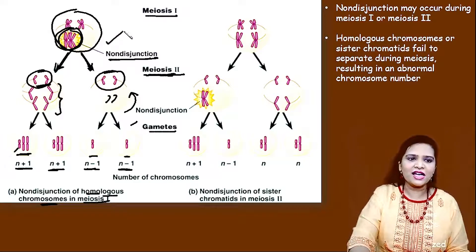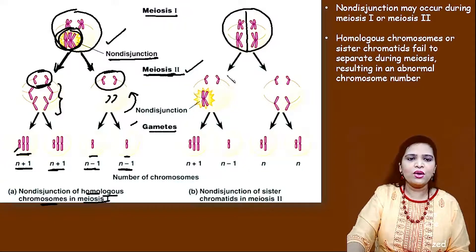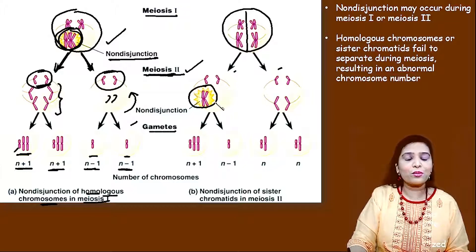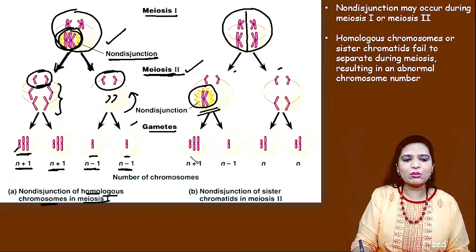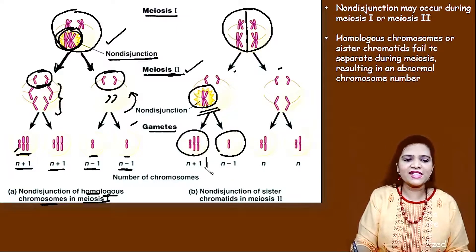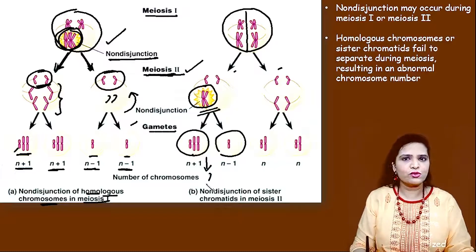This may occur at meiotic 1 stage or even in the meiotic 2 stage. In the meiotic 1 cell the separation is fine, but when it divides at the meiotic 2 stage, the sister chromatids did not get separated — there is non-disjunction. As a result, one gamete receives 3 copies whereas another gamete receives only one copy of the chromosome. This results in chromosomal abnormalities.